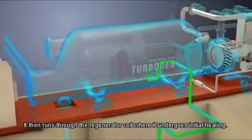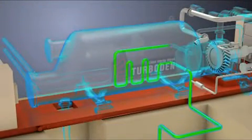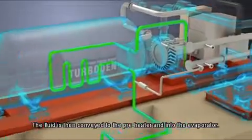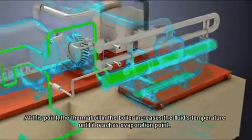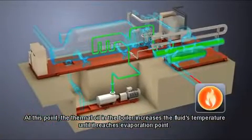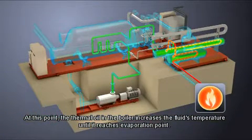It then runs through the regenerator coil where it undergoes initial heating. The fluid is then conveyed to the preheater and into the evaporator. At this point, the thermal oil in the boiler increases the fluid's temperature until it reaches evaporation point.